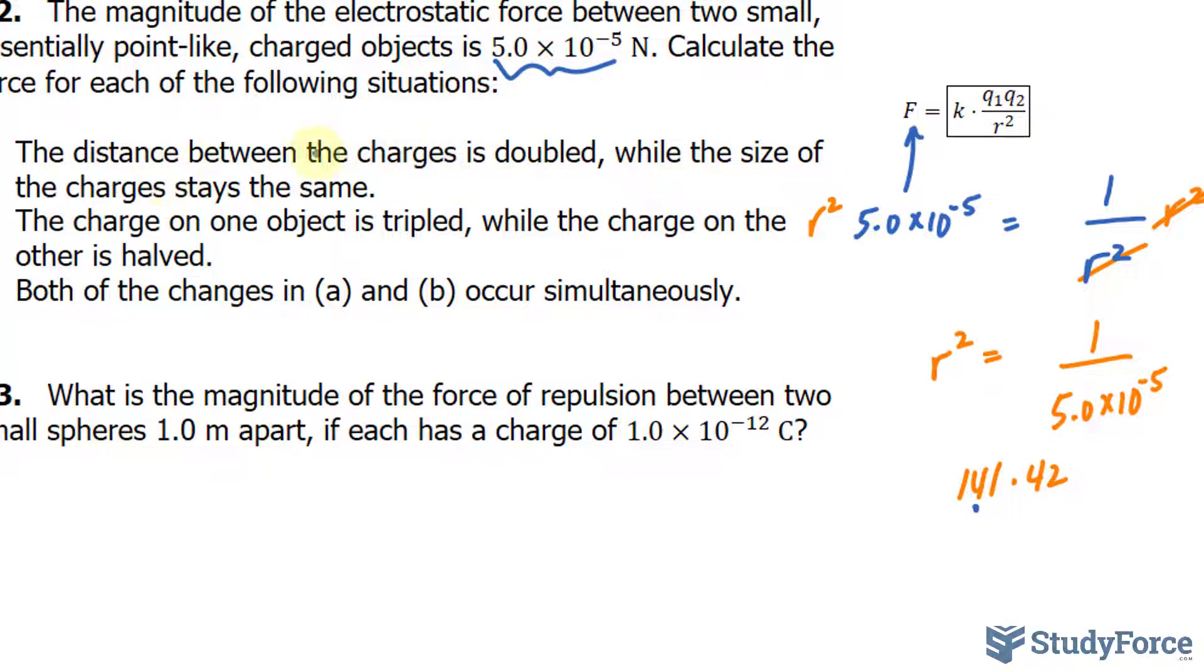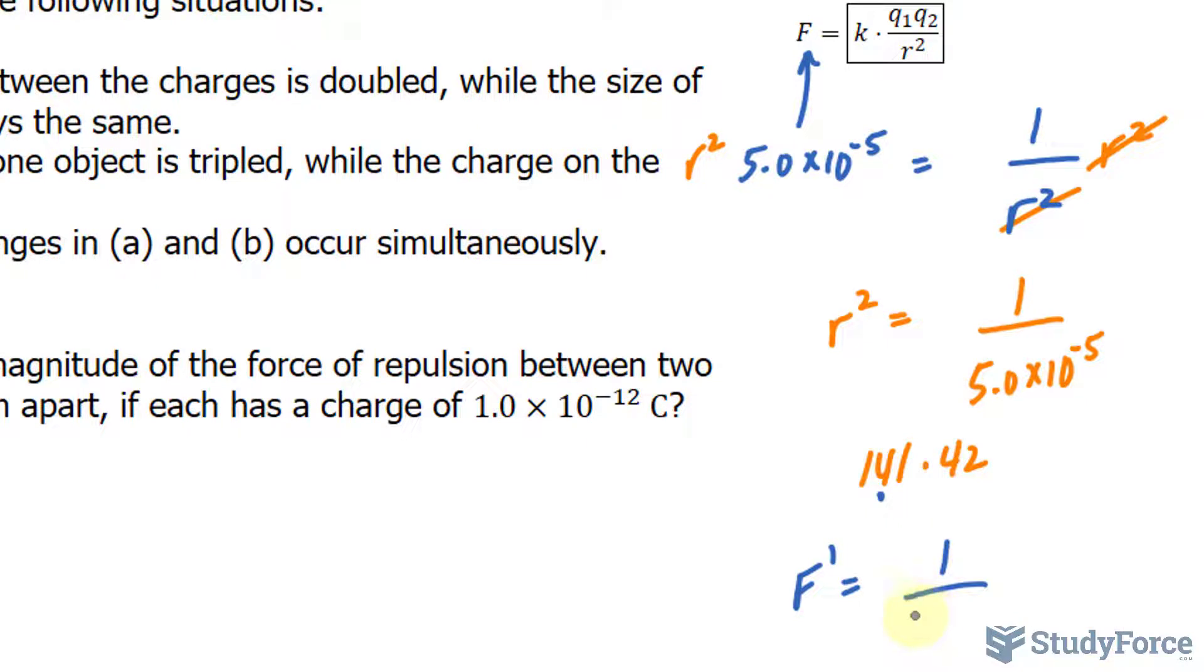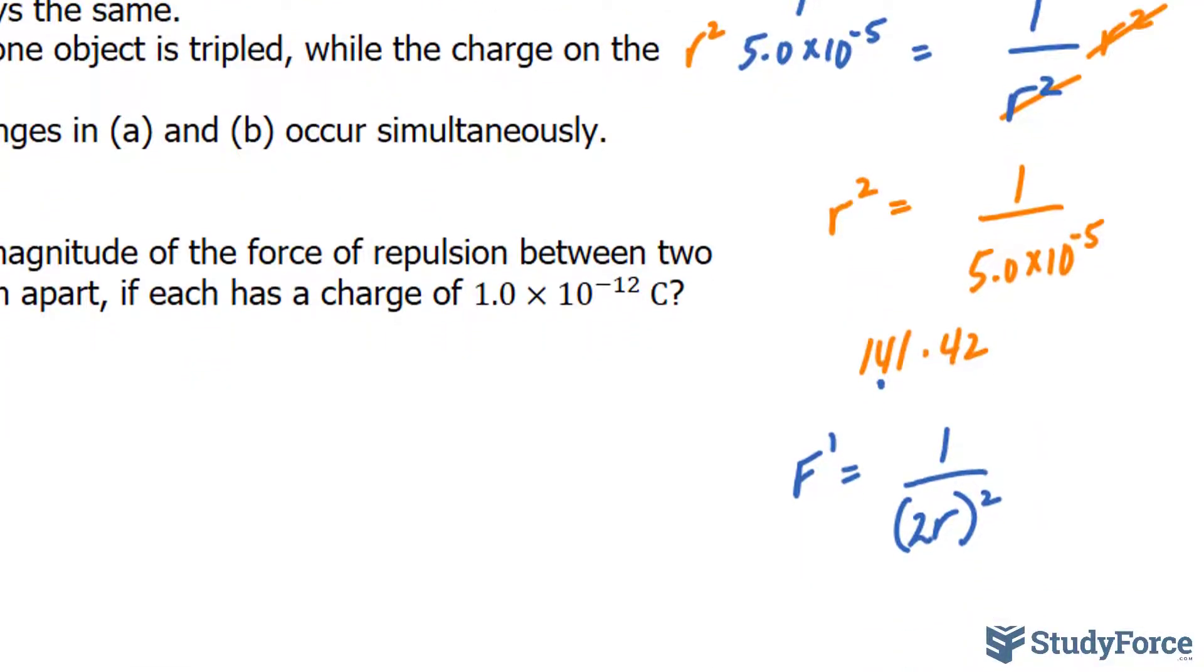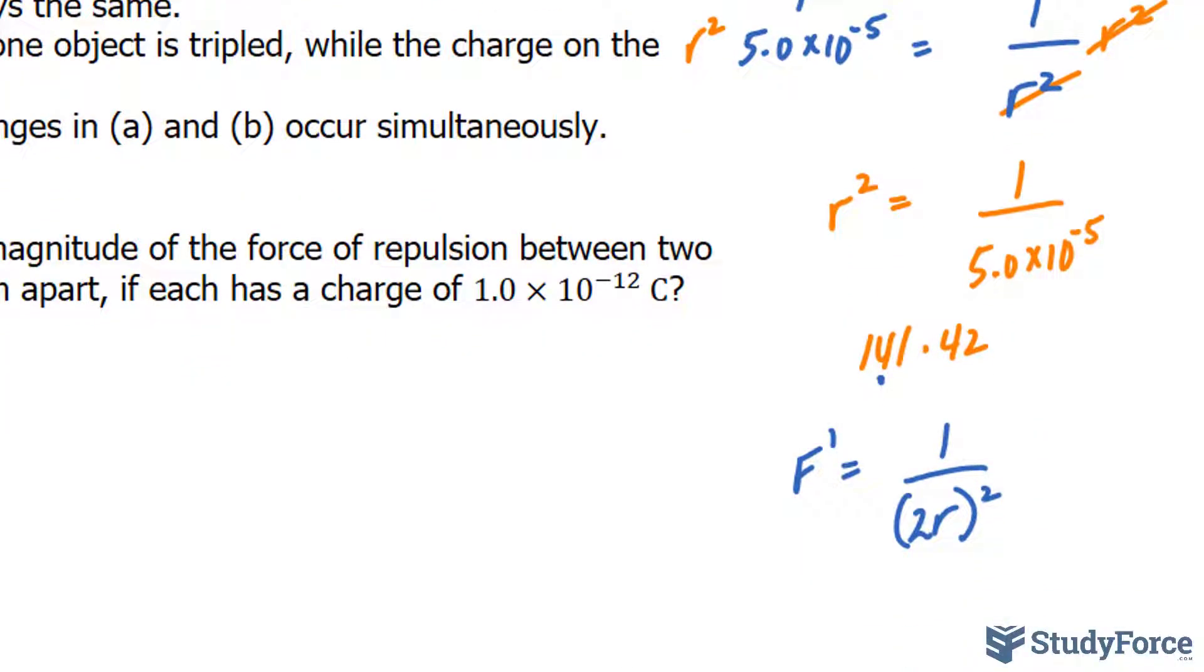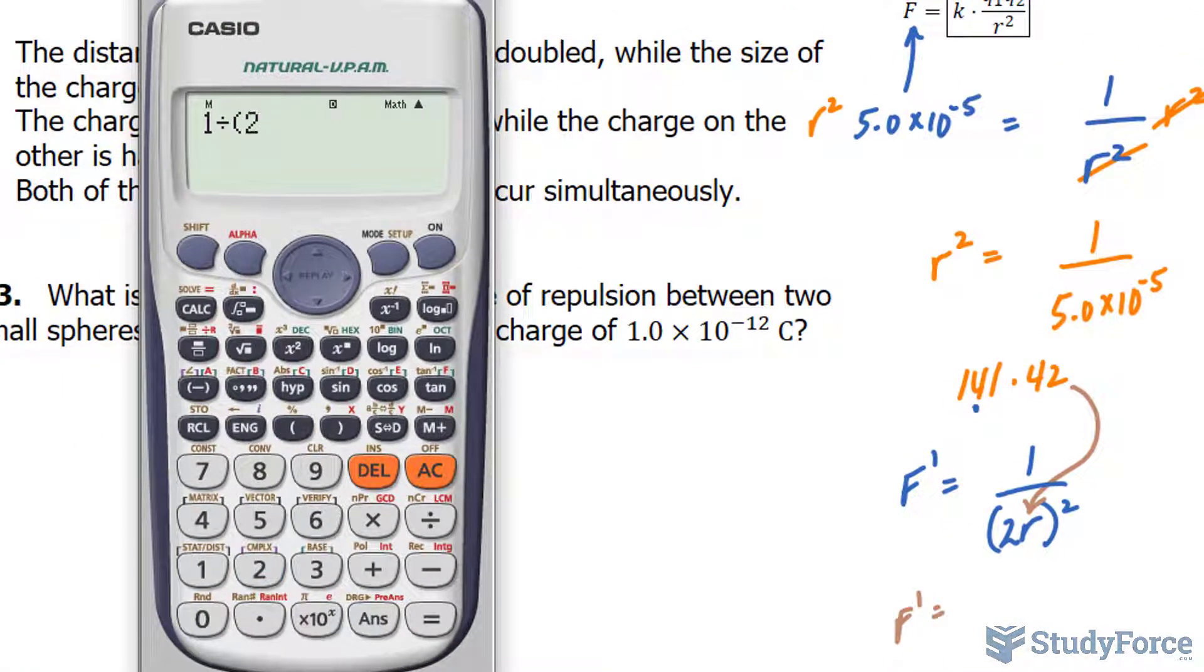Now it's being doubled. The distance is being doubled, so I'll find another force, which I'll call f prime. And I'll say 1 over, and in for its r squared, I'll write down 2r raised to the power of 2. 2 times the original radius raised to the power of 2. And I'll substitute this value in for r to solve for f prime. I have 1 divided by 2 times 141.42, and that entire expression is being raised to the power of 2.